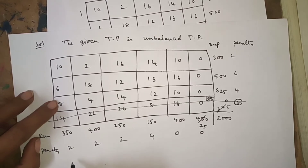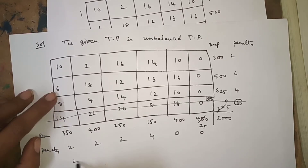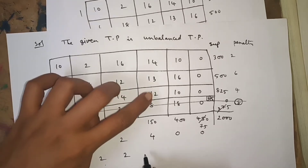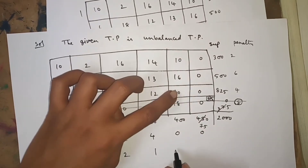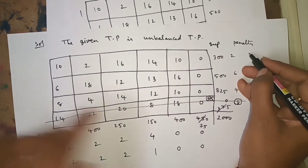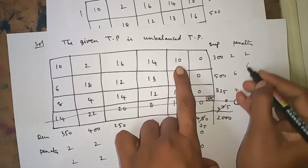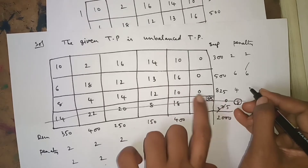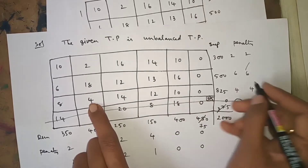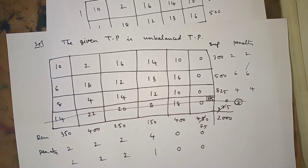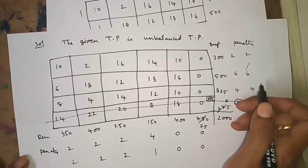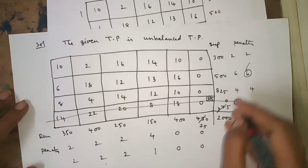Second iteration penalties: difference between 8 and 6 is 2; 4 and 2 is 2. Finding penalties: 14 and 12 gives 2; 13 and 14 gives 1; 10 and 10 gives 0. Second time column penalties: 0 and 2 is 2; here 0 and 6 is 6; here 0 and 8; 0 and 4; 0 and 4.